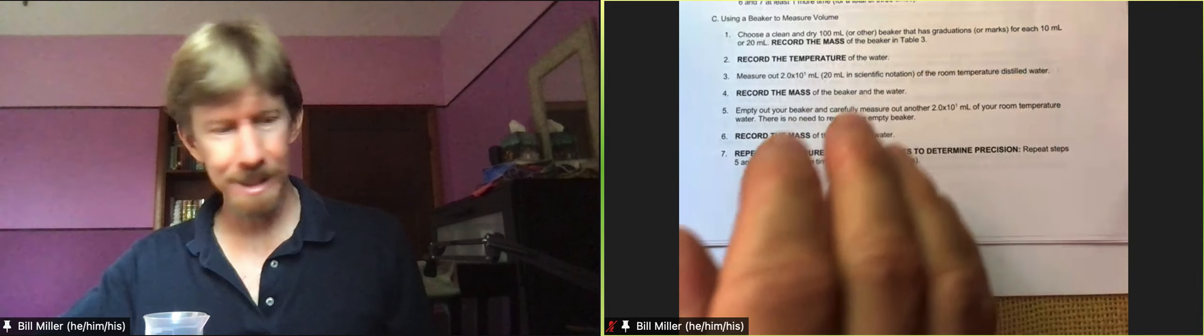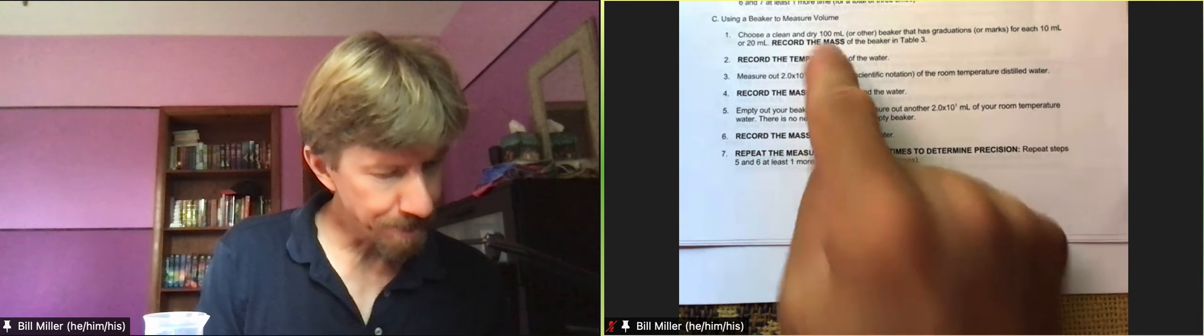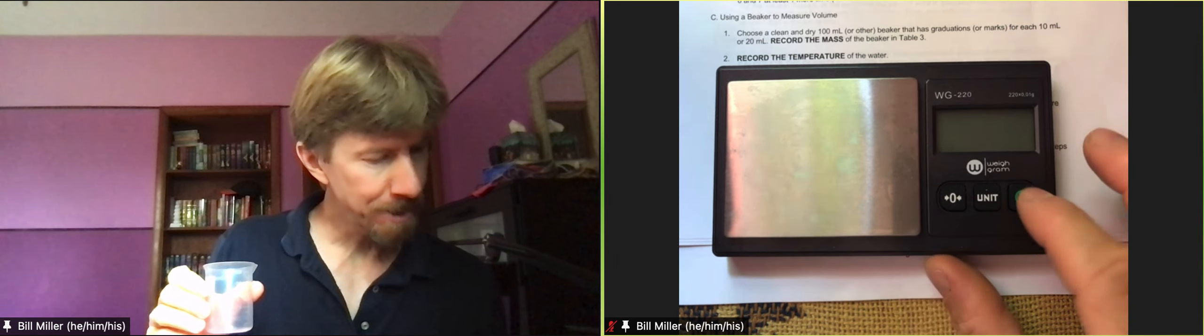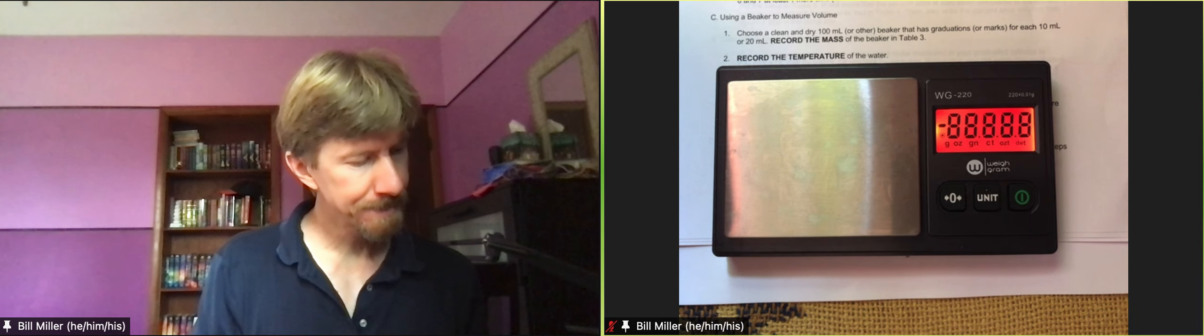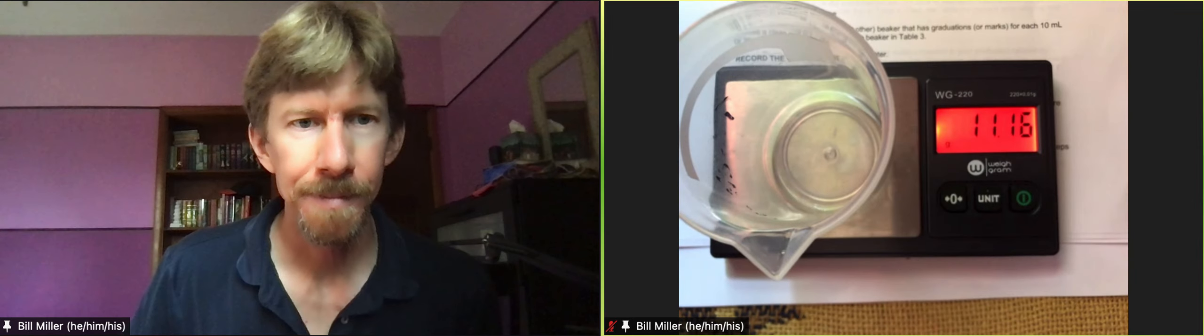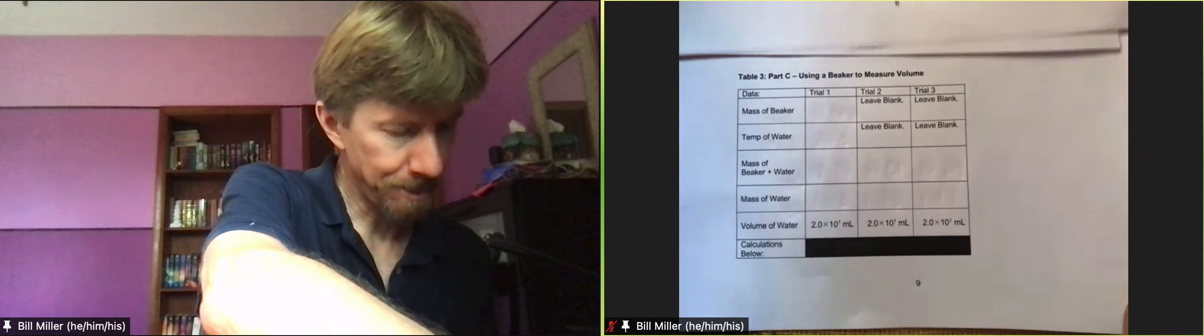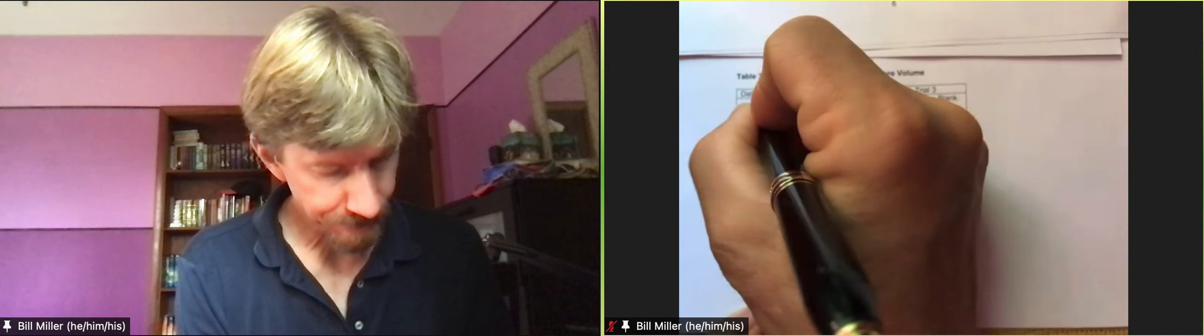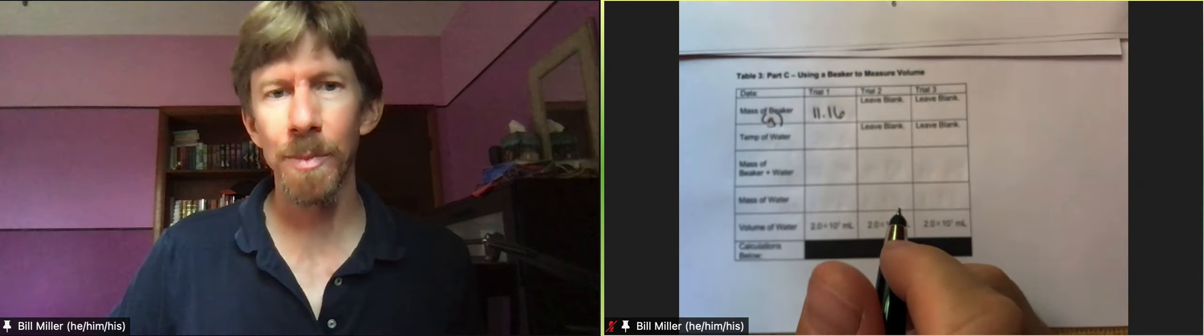Let me get my scale. Record the mass. And I looked at it, and my markings are every 10 milliliters, just like it says. Record the mass. There's my circle. 11.16. I think that's the same as the previous one. Good. That means it's clean and dry. That's a useful check. And that's 11.16 grams.